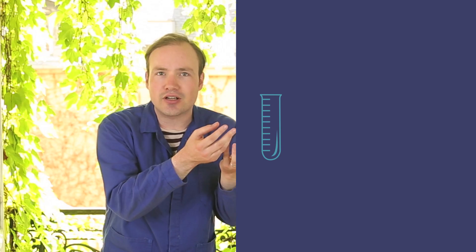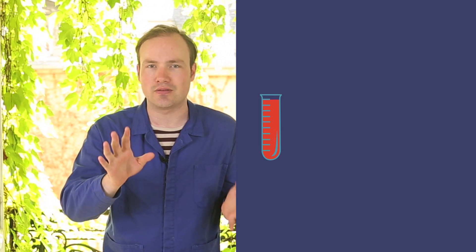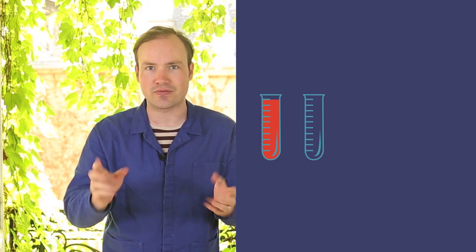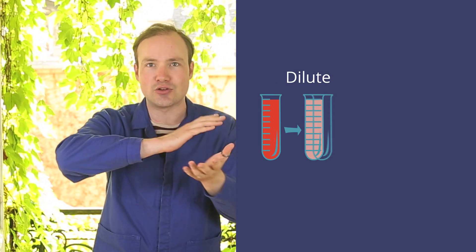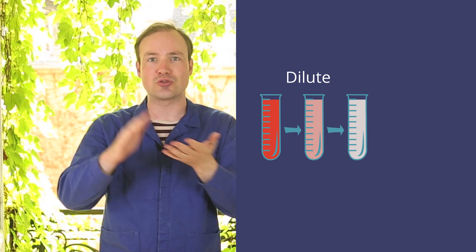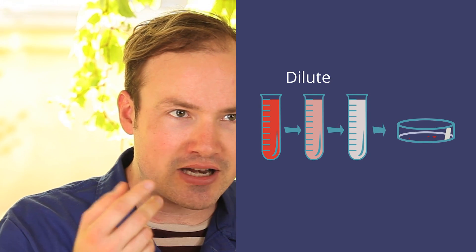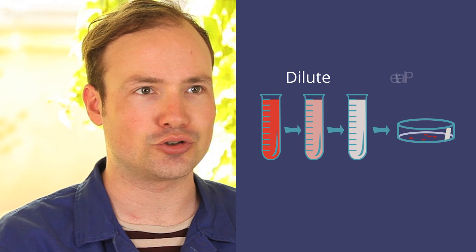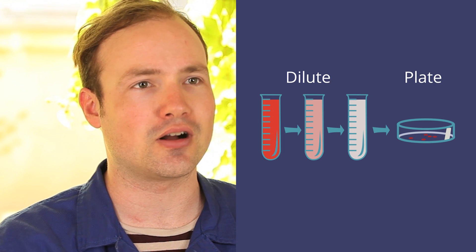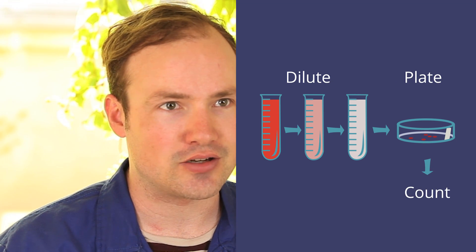One way to do it is plating. You take a bunch of bacteria, you dilute them repeatedly until you get to a very, very high dilution factor like 10 million, and then you spread them out evenly on petri dishes to produce colonies. Every single bacterium in the original culture forms one colony, so you can count the colonies to count the bacteria.